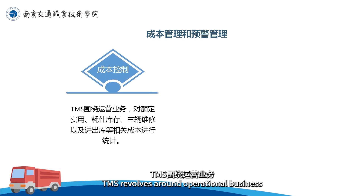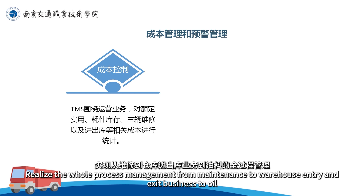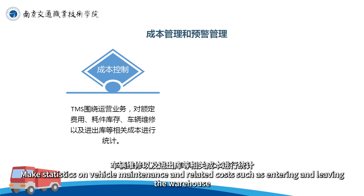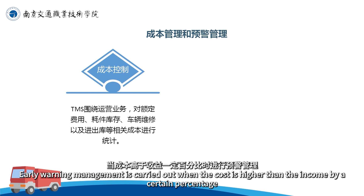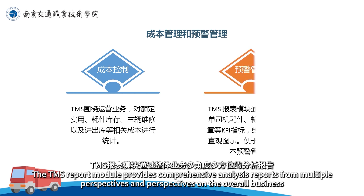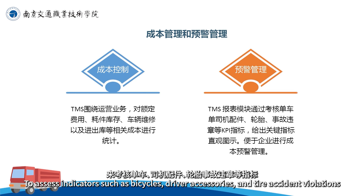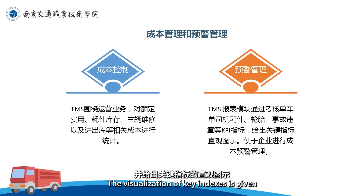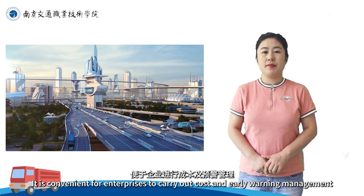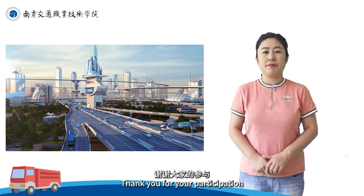成本管理和预警管理：TMS围绕运营业务，实现从维修到仓库进出库、业务到油料的全过程管理。通过对额定费用、耗件库存、测量维修以及进出库等相关成本进行统计，当成本高于收益一定百分比时，进行预警管理。TMS报表模块通过整体业务多角度、多方位的分析报告，来考核单车、司机、配件、轮胎、事故违章等指标。